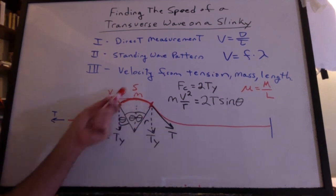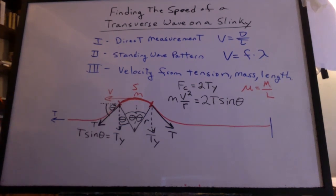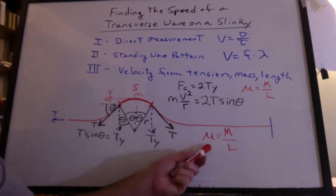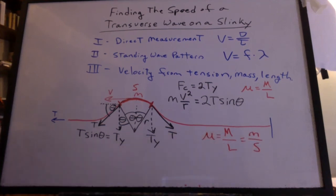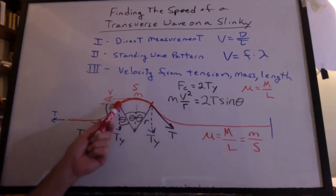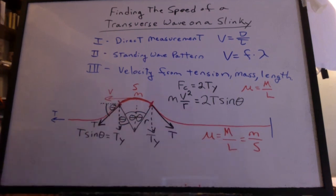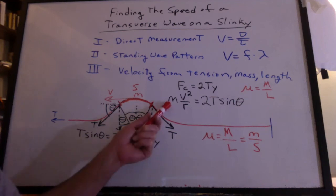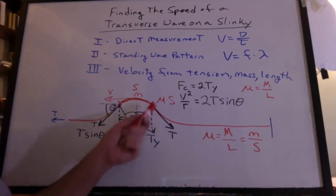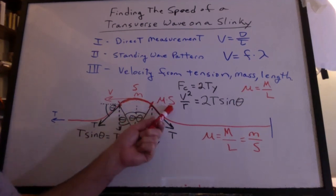Let's call this arc length S. We'll use the linear mass density. If the density is constant, then we can say that the mass of the slinky at the top divided by the arc length is the same ratio. We can now eliminate M. If we know the linear mass density, we can multiply by the arc length.